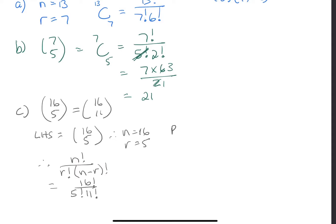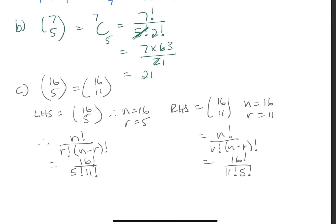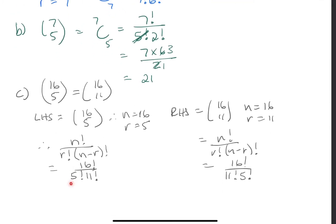My right hand side equals sixteen choose eleven. In other words, n equals sixteen, and r equals eleven. Therefore, the right hand side equals n factorial divided by r factorial, n minus r factorial, that gives us sixteen over eleven factorial, multiply by sixteen take away eleven, is five factorial. And you will see that five factorial eleven is the same as eleven factorial five.